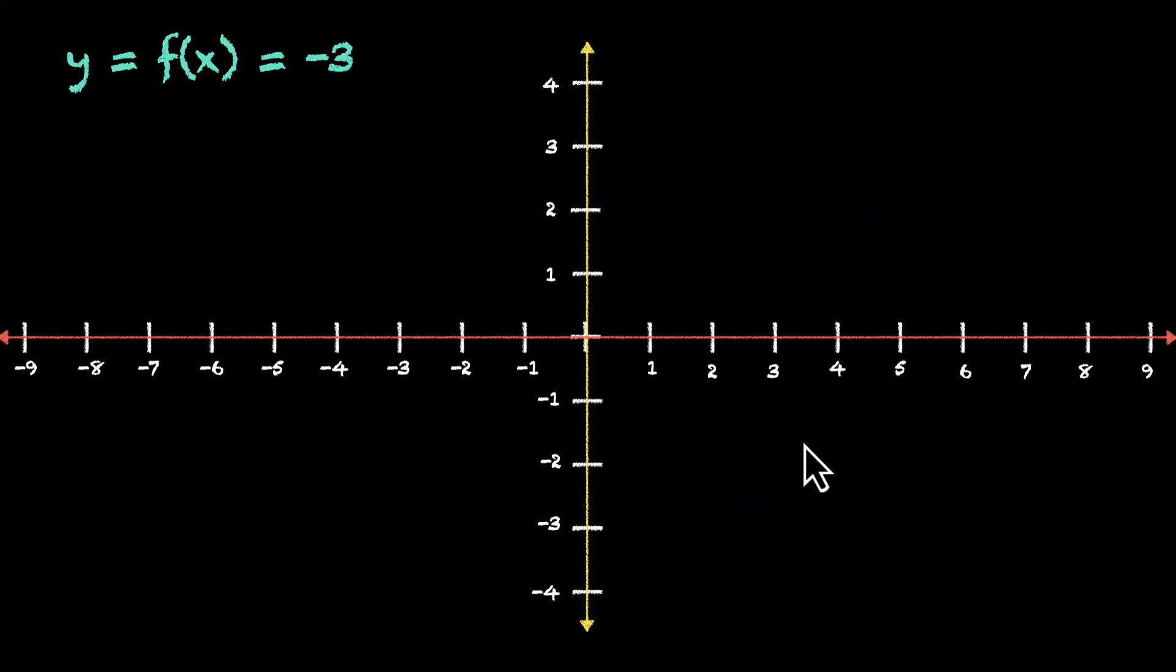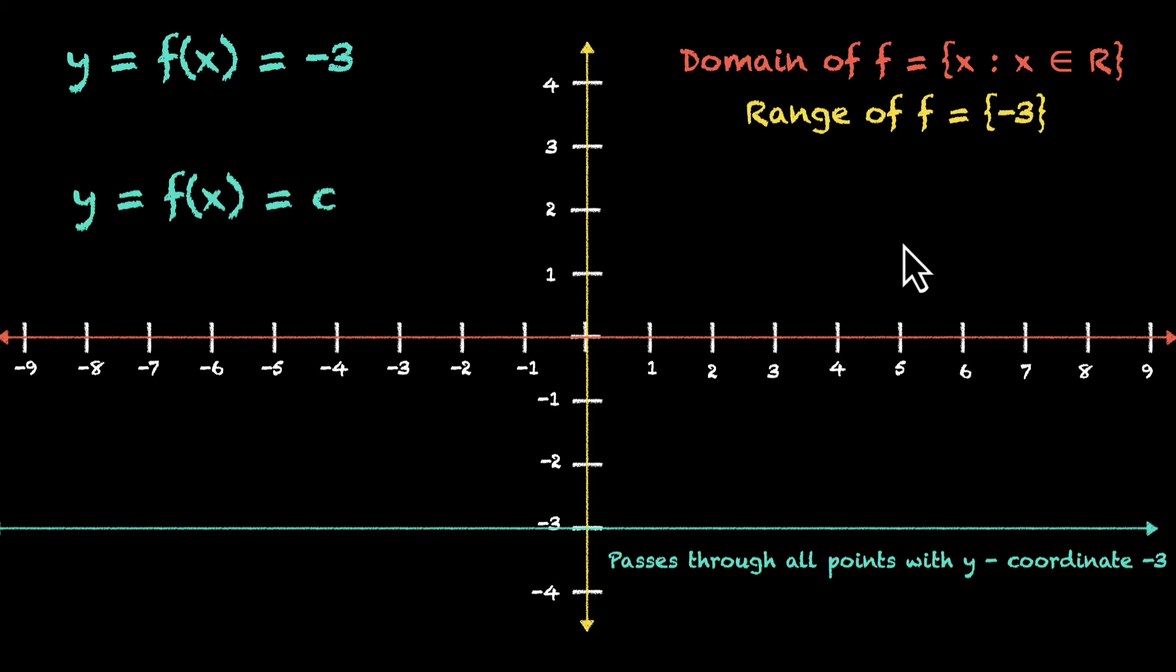Let's take a different example. If you have y = -3, your line will pass through -3. Your domain will be R, but your range here will be {-3}. And in general, when y = f(x) = c, your domain will be R, but your range will be {c}. So we have learned how to define identity function and constant function. We've seen their graphs, and we now know what their domain and range are.